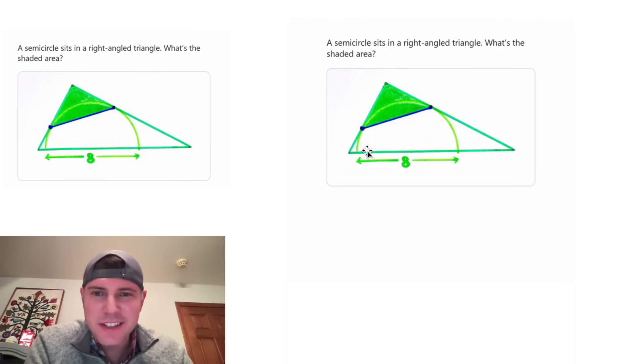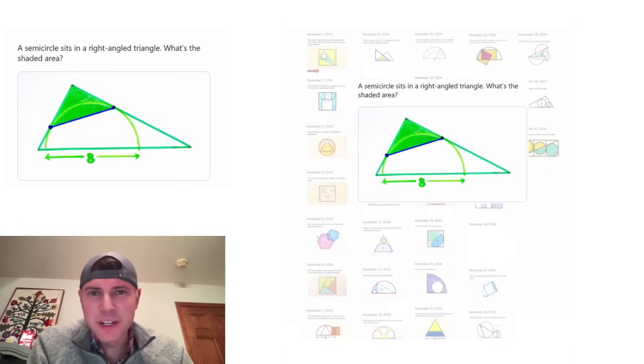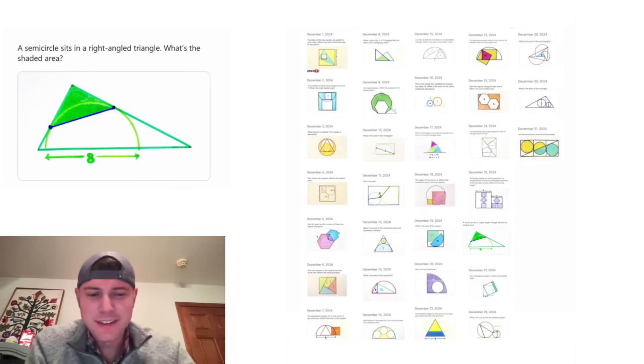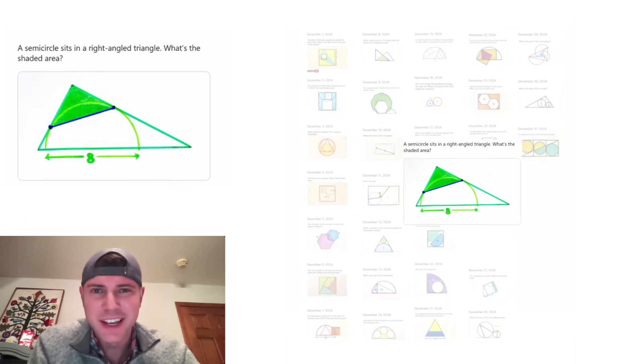Hey guys, this looks like a fun one. A semicircle sits in a right-angled triangle and we need to find the shaded area. We're given that the diameter of the semicircle is 8. This is day 26 of our Advent calendar. For the month of December, we're solving 31 Catriona Agg puzzles in 31 days.